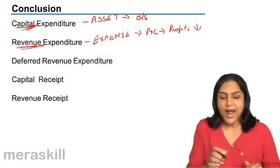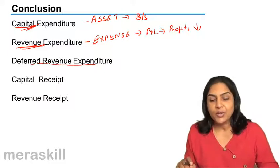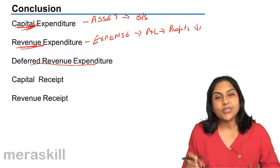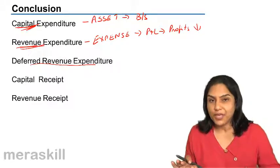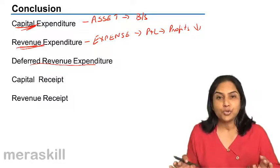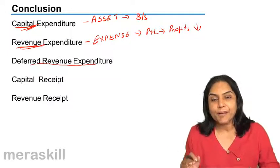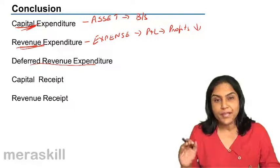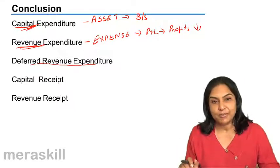We also had a concept of deferred revenue expenditure where an expenditure which is actually revenue in nature, normally would be revenue in nature. But since it's of a huge amount, substantial amount and also we expect to get the benefit of it in future, in the future years, it was called as deferred revenue expenditure.